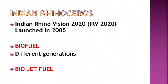The Indian Rhino Vision 2020 (IRV 2020) was launched in 2005. It is an ambitious effort to attain a wild population of at least 3,000 greater one-horned rhinos spread over 7 protected areas in Assam by 2020, as part of a species recovery plan. IRV 2020 aims to translocate rhinos from Kaziranga and Pobitara to 5 other protected areas: Manas, Laokhowa, Burachapori, Kokilamari, Dibru-Saikhowa, and Orang.